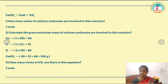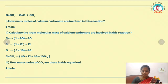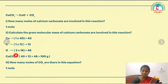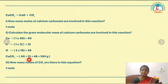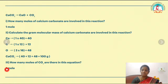For calcium, the atomic mass is 40 and we have 1 atom, so 1 × 40 = 40. For carbon, atomic mass is 12, so 1 × 12 = 12. For oxygen, we have 3 atoms, so 3 × 16 = 48. Adding: 40 + 12 + 48 = 100 grams. So the gram molecular mass of calcium carbonate is 100 g. How many moles of carbon dioxide are in the reaction? Since there is no number, it is 1 mole.